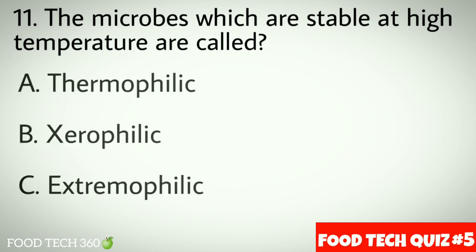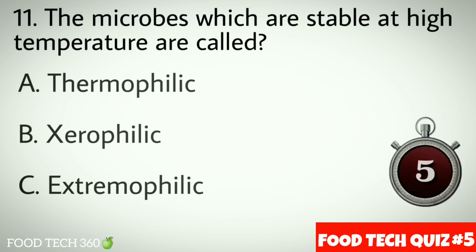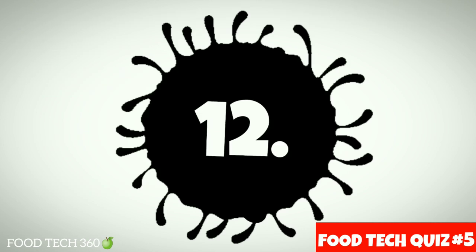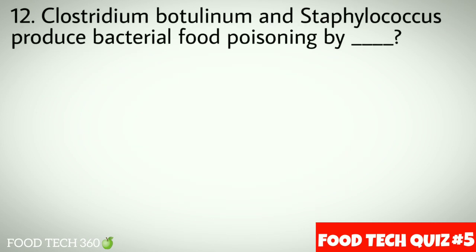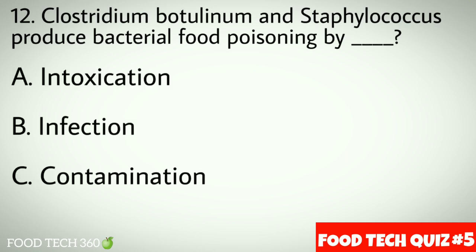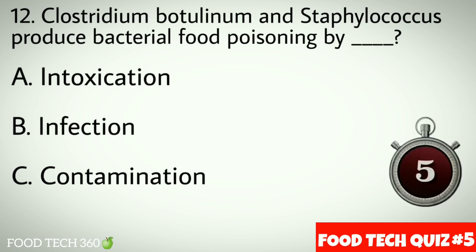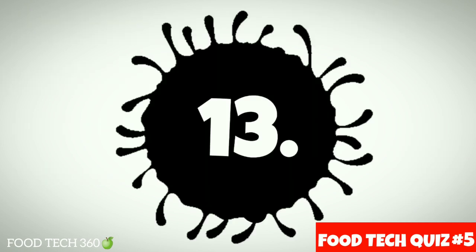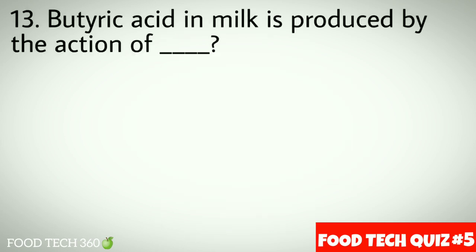Question number eleven: the microbes which are stable at high temperature are called. Options: a) thermophilic, b) xerophilic, c) extremophilic. Correct answer: a) thermophilic. Question number twelve: Clostridium botulinum and Staphylococcus produce bacterial food poisoning by dash. Options: a) intoxication, b) infection, c) contamination. Correct answer: a) intoxication.